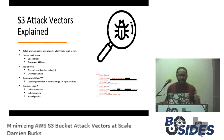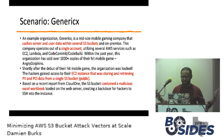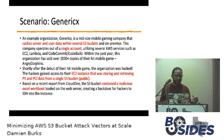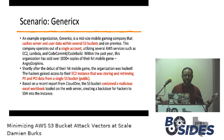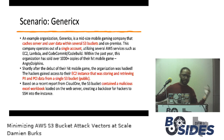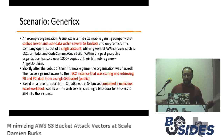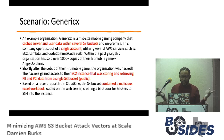Let's get into the scenario. I created an example organization called Generics — hopefully no one has named their organization that. It's basically a mid-sized mobile gaming company that caches their server and user data within several S3 buckets and on-prem. The key thing is the company operates out of a single account and utilizes AWS services such as EC2, Lambda, and CodeCommit. Within the past year, they sold over 1,000 copies of their hit mobile game called Angry Dolphins. After that debut, the organization was hacked.